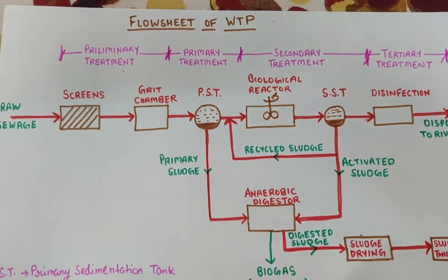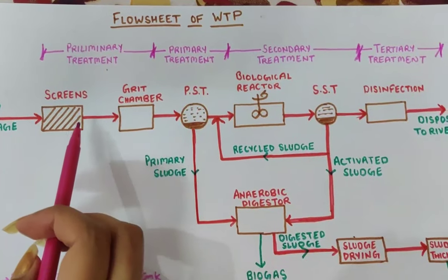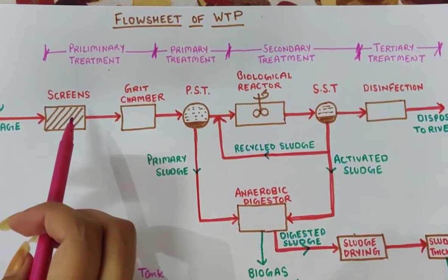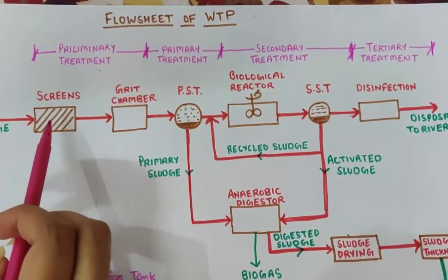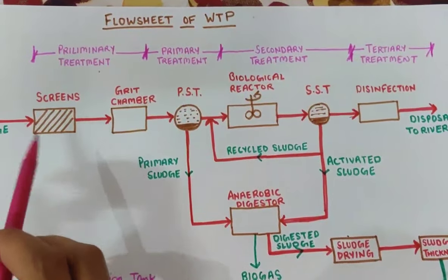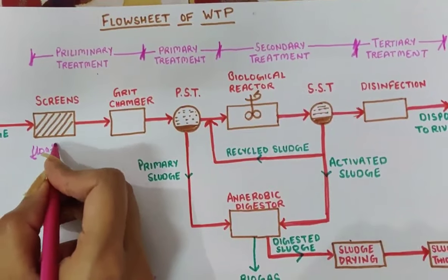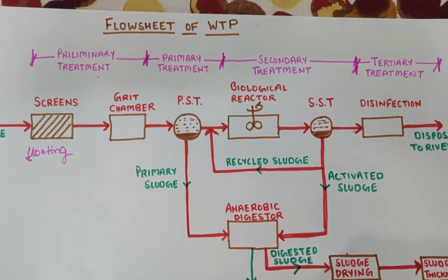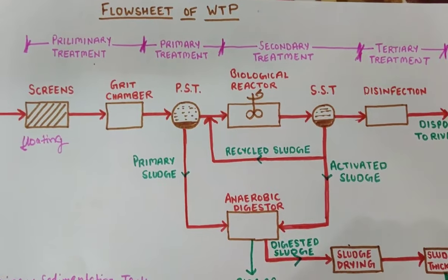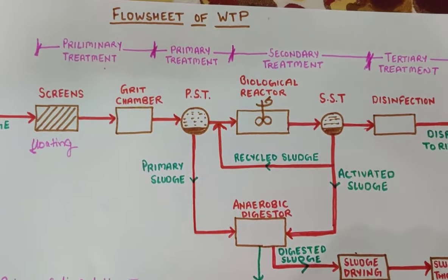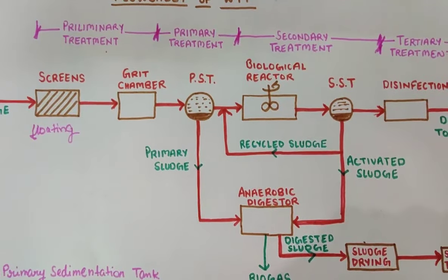Let's start with preliminary treatment. Raw sewage will first enter screening. The equipment used is the screen. In screening, floating materials are removed by the screens. These can be simple bar screens, inclined screens, and so on — but the key point is that the screen is the unit name, and the operation is the removal of floating materials.